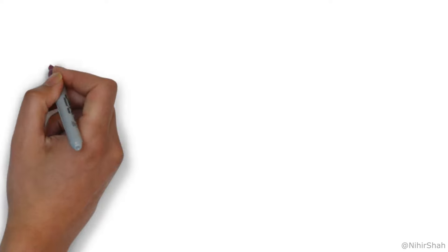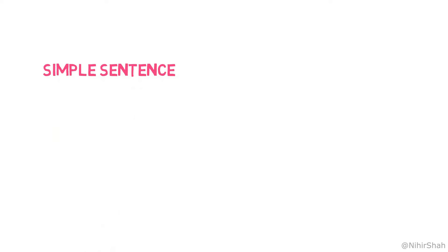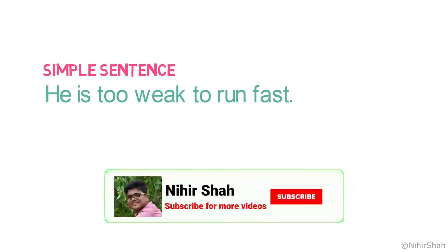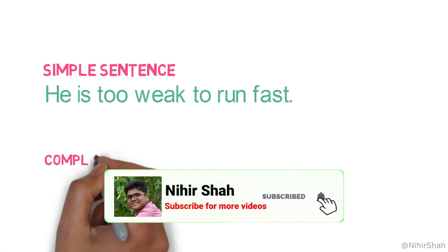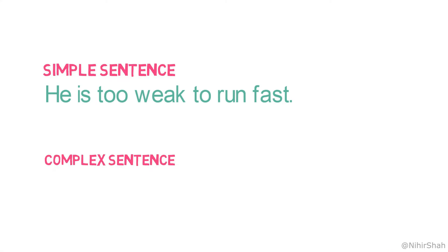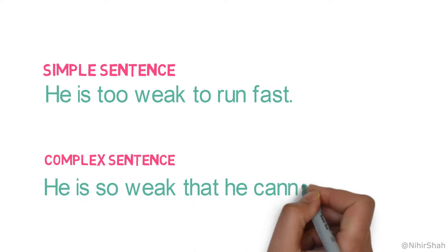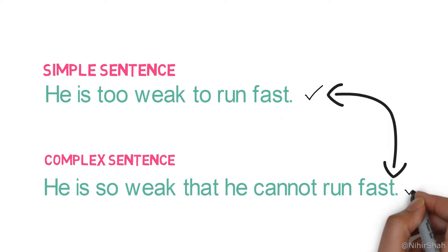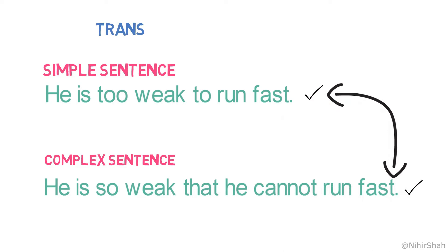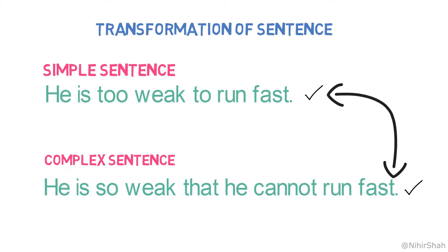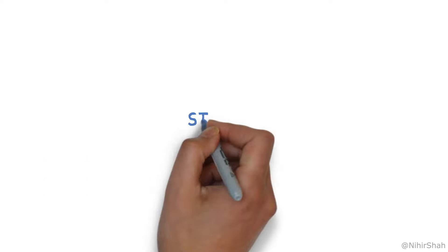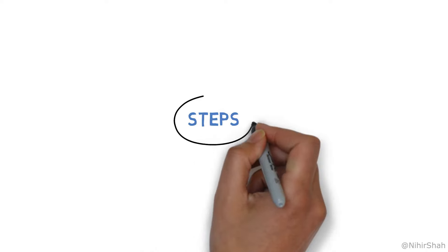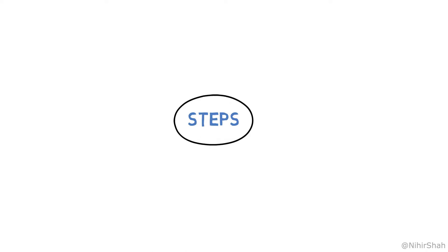Now, if you remember, we looked into the example of the simple sentence: 'He is too weak to run fast.' And for the complex sentence, the example was: 'He is so weak that he cannot run fast.' If you notice closely, the meaning of both the sentences is identical. This is called the transformation of a simple sentence into a complex sentence without changing the meaning. Now, let's learn the three-step formula to convert a simple sentence into a complex sentence.